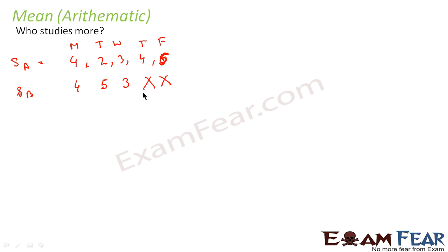So we'll find the mean. Mean of student A is 4 plus 2 plus 3 plus 4 plus 5 divided by number of days, which is 5. That's 4 plus 2 is 6, plus 3 is 9, plus 4 is 13, plus 5 is 18, divided by 5, that is 3.6.